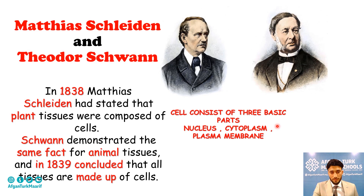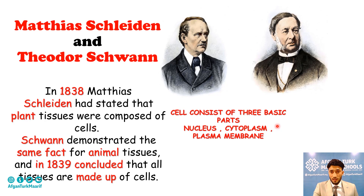In other steps, we find another two scientists: Matthias Schleiden and Theodor Schwann. In 1838, Matthias Schleiden stated that plant tissues were composed of cells. Schwann demonstrated the same fact for animal tissues, and in 1839 they concluded that all tissues are made up of cells.